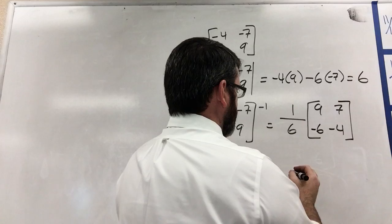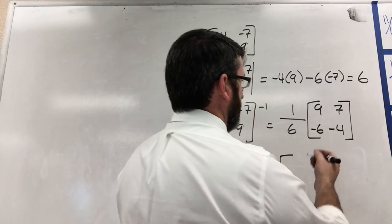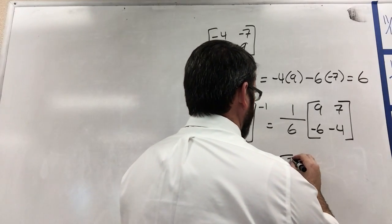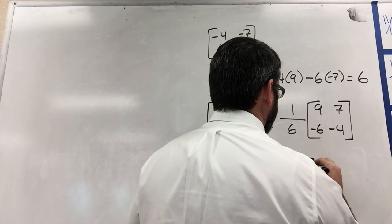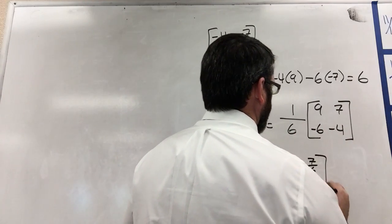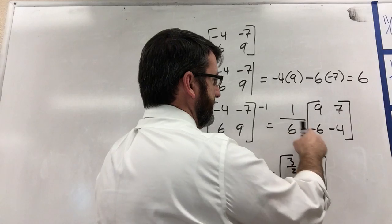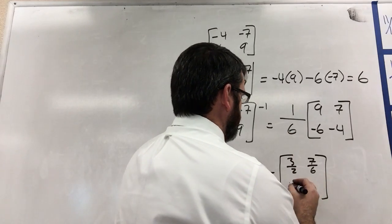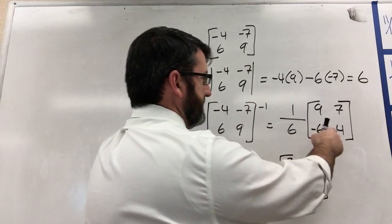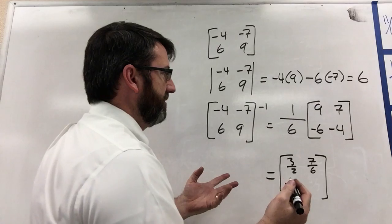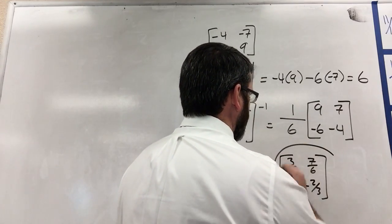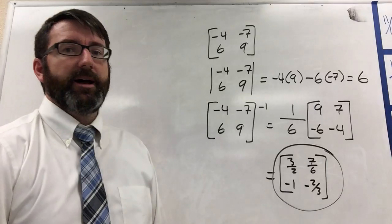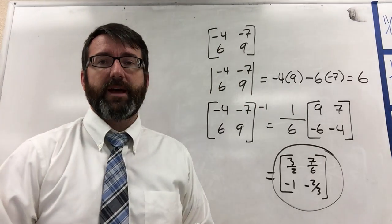And so 1/6 times 9 is 9/6 or 3/2. 1/6 times 7 is 7/6. 1/6 times negative 6 is negative 1. 1/6 times negative 4 is negative 4/6 or negative 2/3. And that is going to be the inverse of that matrix.